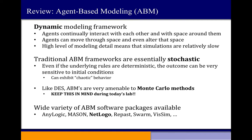Usually Agent-Based Modeling is thought of as being stochastic — the agents move around in a random way and we're interested in what emerges from that. But you can certainly have deterministic Agent-Based Models, such as those implementing cellular automata. As we'll see in some of the models in the lab, you can have totally deterministic rules that still produce stochastic outcomes. One of the bonus questions asks: given deterministic rules, what is the source of the randomness?